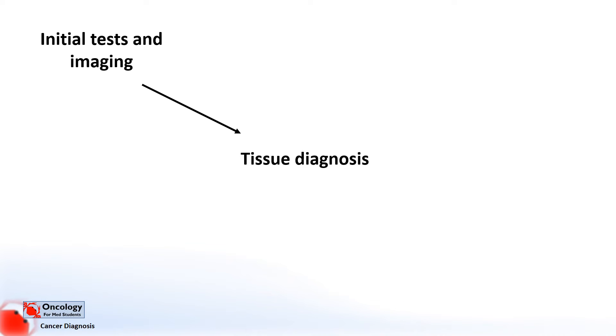If something suspicious is seen on the scan — something that looks like a tumour — we then need to get a tissue sample in order to make a tissue diagnosis of cancer. If it does unfortunately confirm that there is a cancer, we then need to go on to stage the cancer.